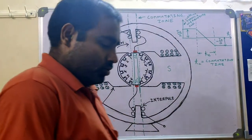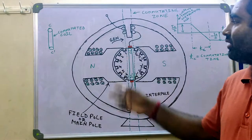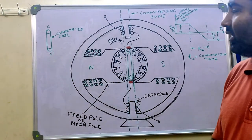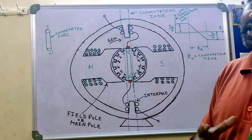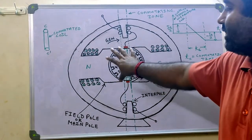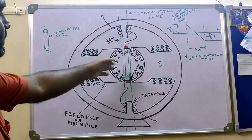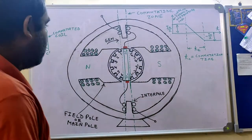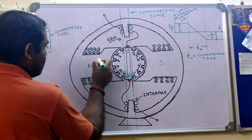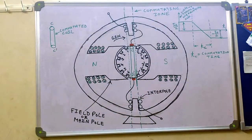We are taking generating action, assuming a prime mover gives mechanical energy input to this DC generator. The prime mover — say a diesel engine — has its shaft mechanically coupled with the shaft of the DC generator. The prime mover is rotating the armature in clockwise direction. If you are asked to find the inducing of polarity in a conductor, you can apply Fleming's right hand rule or take the cross product of V and B. Lines of flux are directed from north to south outside the magnet, and south to north inside the magnet.